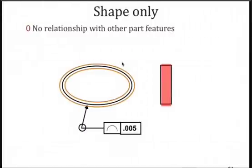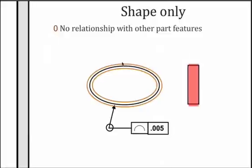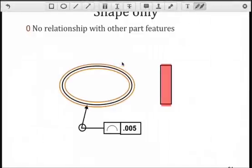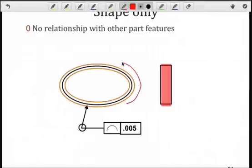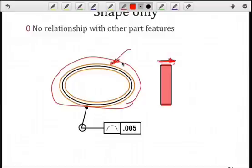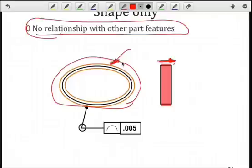The shape only, as we saw in the first example, is a 2D tolerance zone, based on the basic profile. And, as we can see here by this red shaded region, I'm going to have an infinite number of cross-sections with this shape of tolerance zone. No relationship with any part features, so I can orient this in any direction.